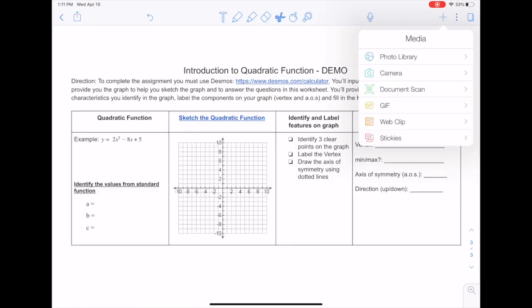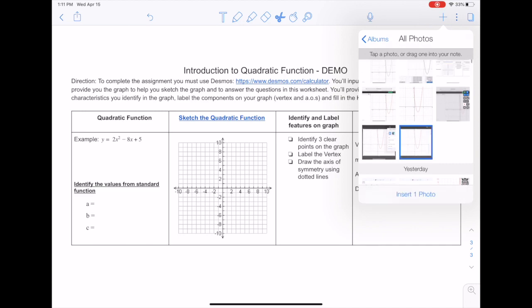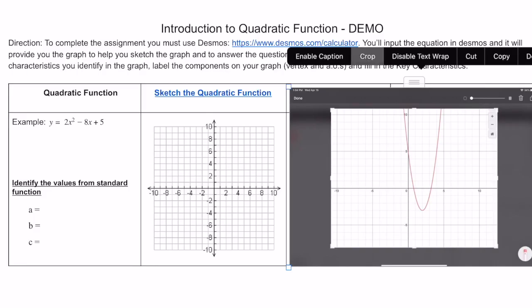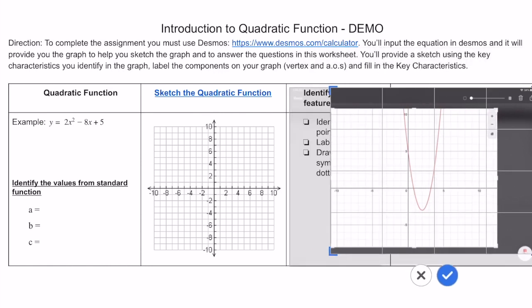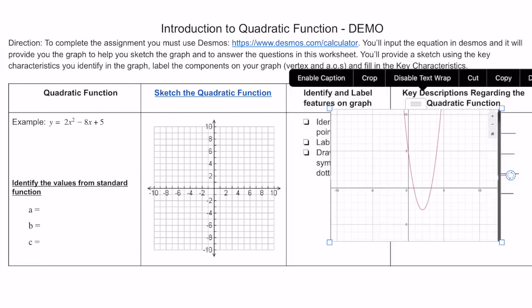Once you crop your photo, press done and you can save it to photos. Then on your Notability, go to your photo library and find that cropped photo that you made and just insert. Mine apparently didn't get cropped all the way, so I'm just going to recrop it one more time and I just want the key features.